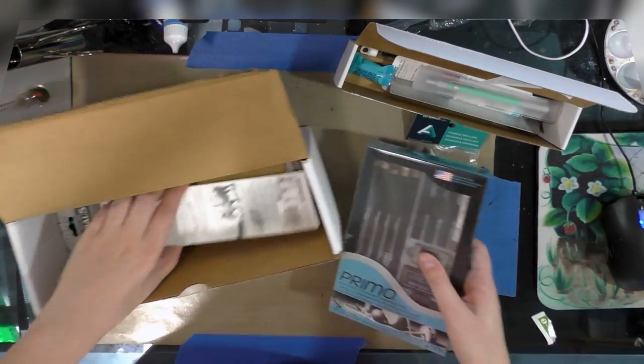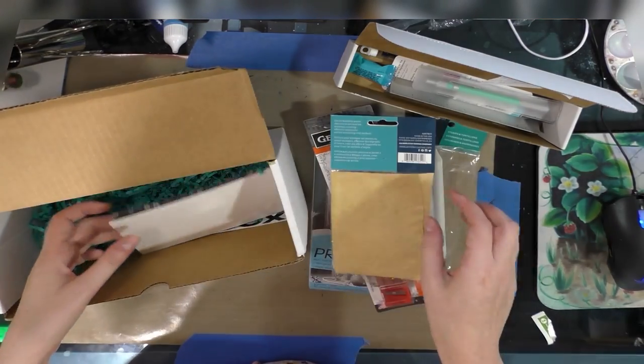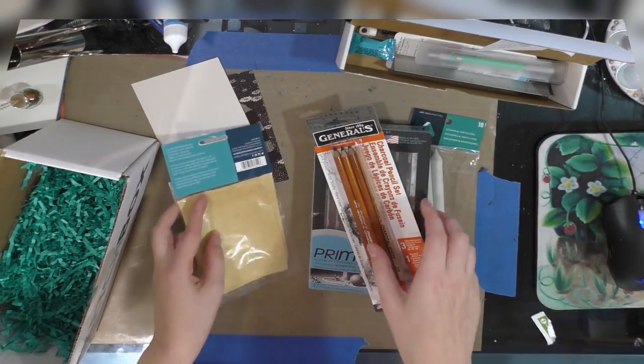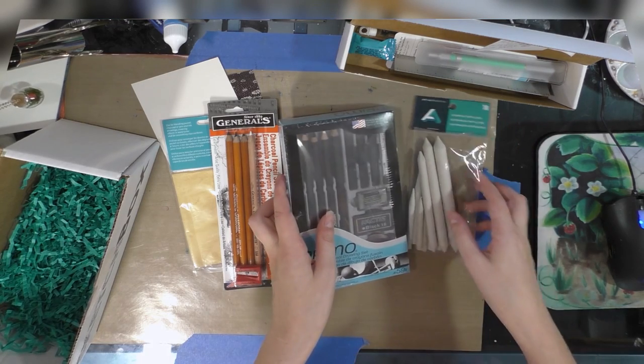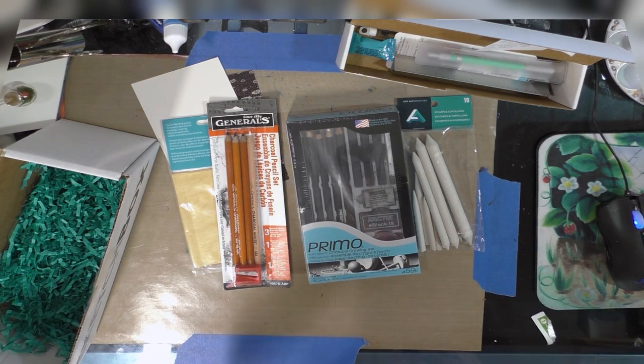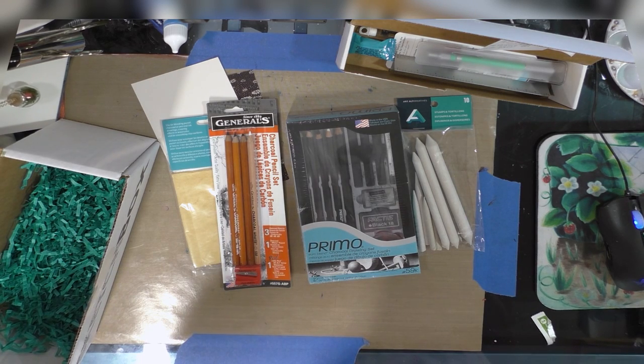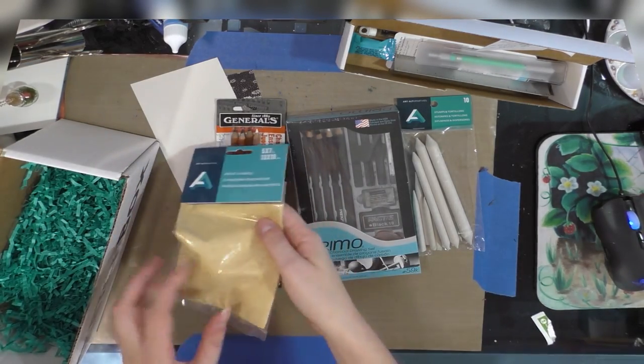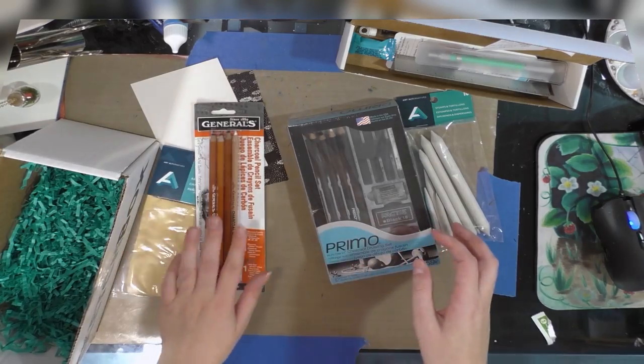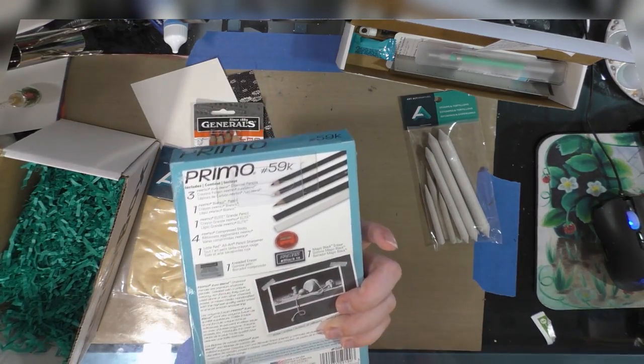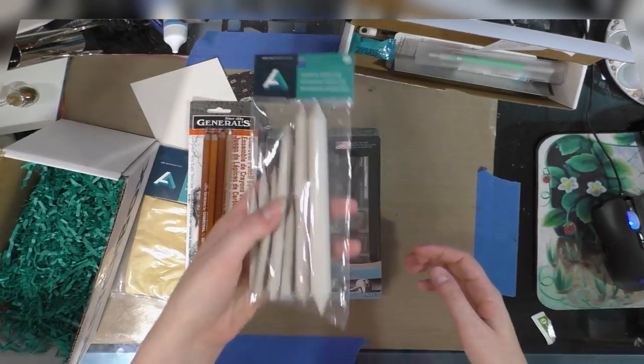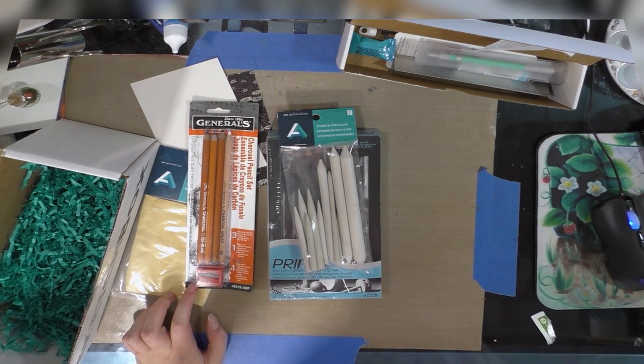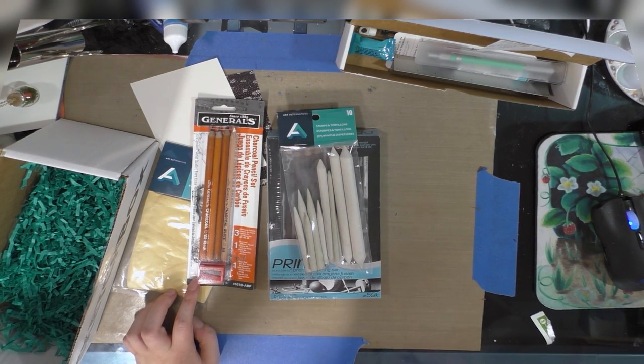Next up is the Sketch Box Basic. Their theme this month seems to be charcoal, and they are just chock full, or should I say charcoal full, of goodies. None of which I've opened because I'm going to do that on camera for you guys. We received a chamois, General's pencils, a primo set of pencils made by the General Pencil Company, and some stumps and tortillions.